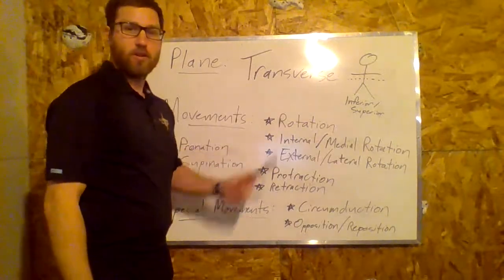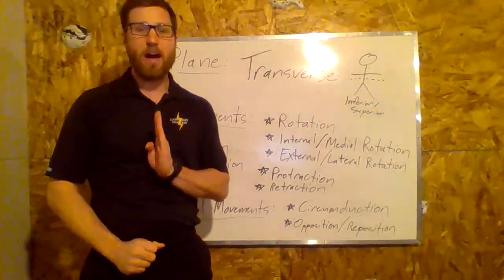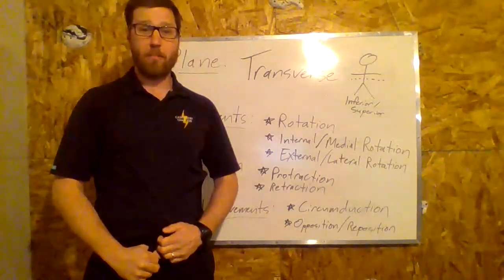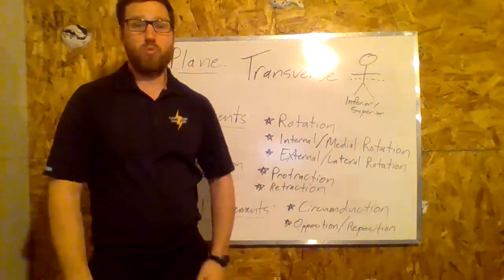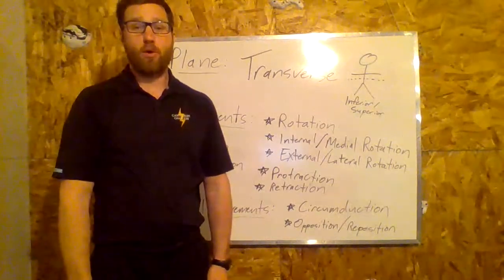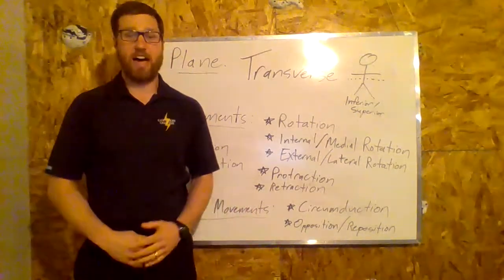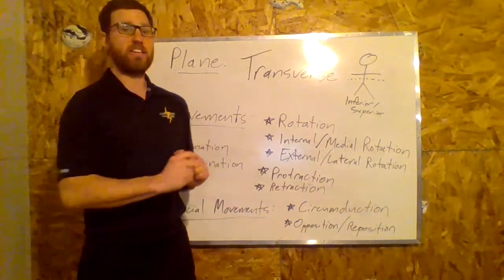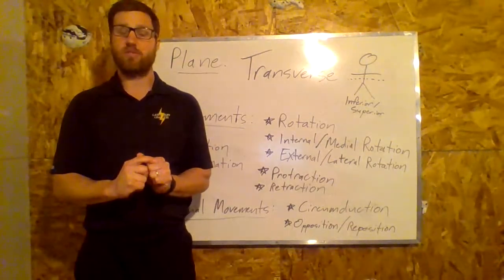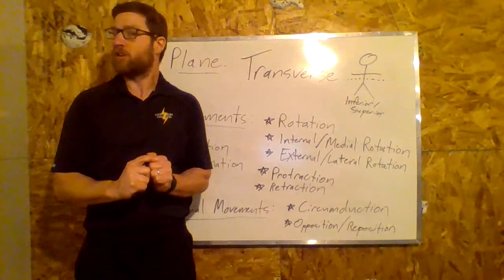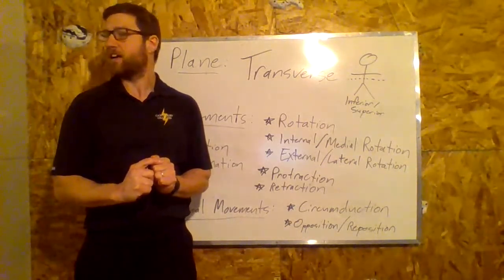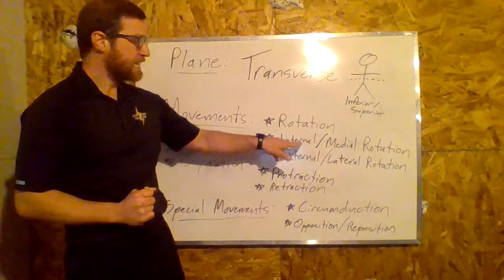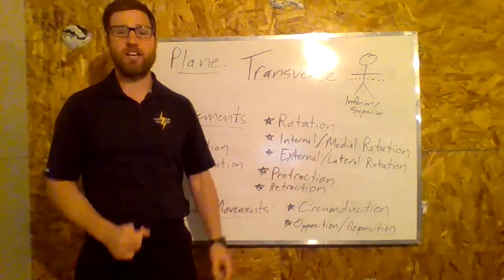First of all, rotation. Rotation is pivoting around one single axis, and we're really looking at the torso of the body. We'll look at some special ways to rotate our arms and legs, but rotation is really looking at the spine. Pure rotation would be twisting at the spine, at the lower back, or at the cervical vertebrae — that would be at the neck. This is pure rotation.